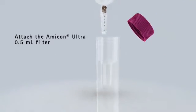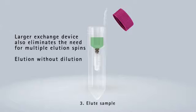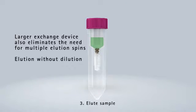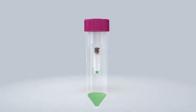Attach the included Amicon Ultra 0.5 milliliter filter to the exchange device. Attaching the included Amicon Ultra 0.5 milliliter filter during the elution phase provides simultaneous concentration as the sample is eluted from the resin.